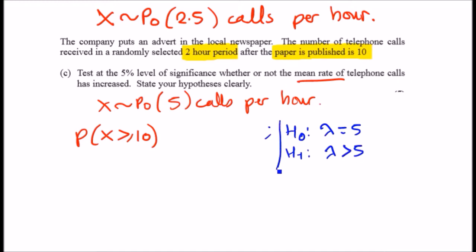This is where we're going. The reason why it's greater than 5 is because we're testing whether the mean rate of calls has increased from, let's say, 5 to the published statement of 10.